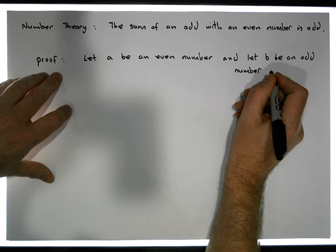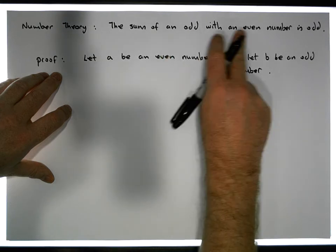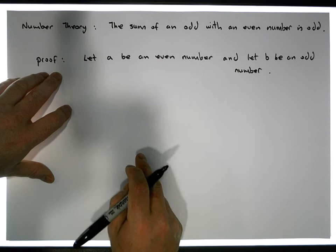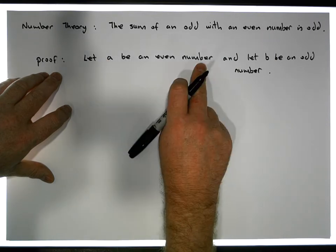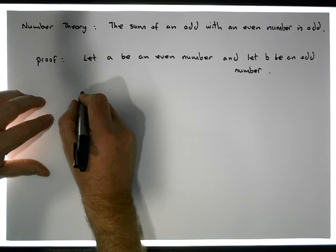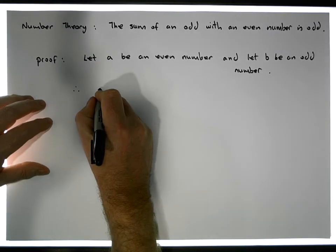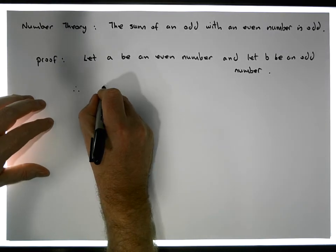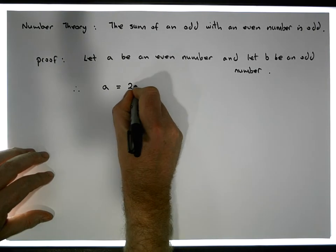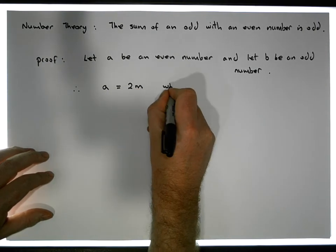So what does this tell us about A and B? Because we can't actually show that the sum of an odd and an even number is odd unless we actually have an odd number and an even number. So we're just going to assume that A is an even number and that B is an odd number. What does that tell us about those two numbers? Well, that tells us that A, well A is even, so we must be able to write A in the form A equals two times some other number, where M is an element of the integers.